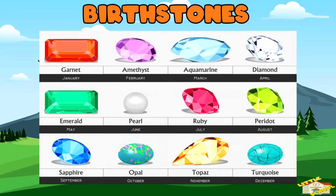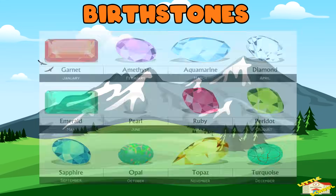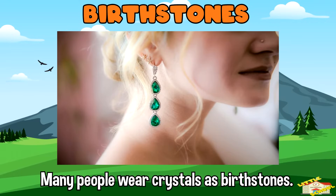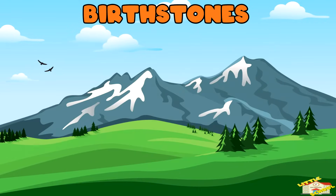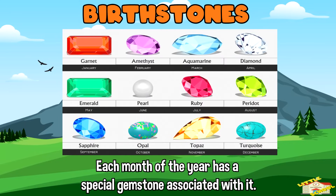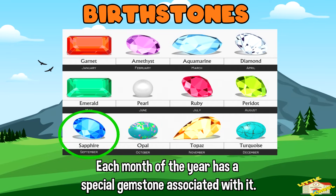Birthstones — many people wear crystals as birthstones. Each month of the year has a special gemstone associated with it, like garnet for January and sapphire for September.